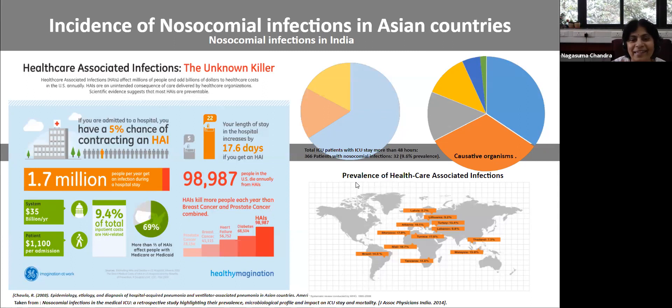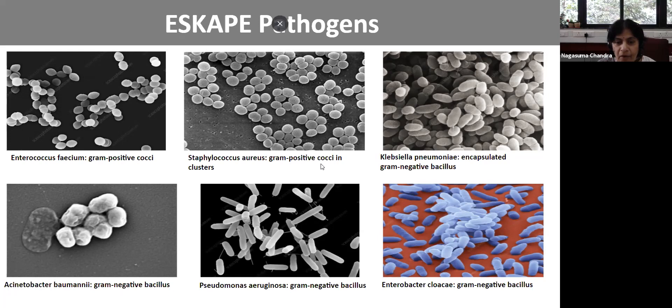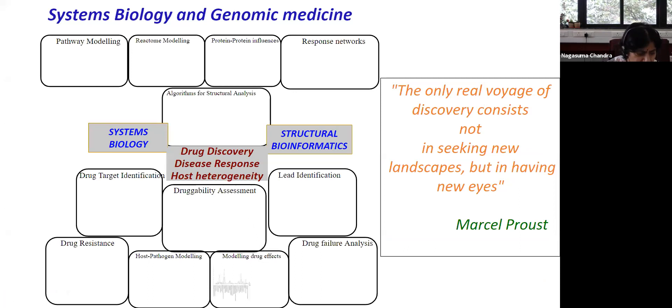ESKAPE is actually an acronym standing for six predominant pathogens: Enterococcus, Staphylococcus aureus, Klebsiella pneumoniae, Acinetobacter baumannii, Pseudomonas aeruginosa, and Enterobacter. These six are the most predominant in hospital-acquired infections. They survive hostile ICU conditions, withstand the onslaught of antibiotics and various other measures, and are highly drug resistant.